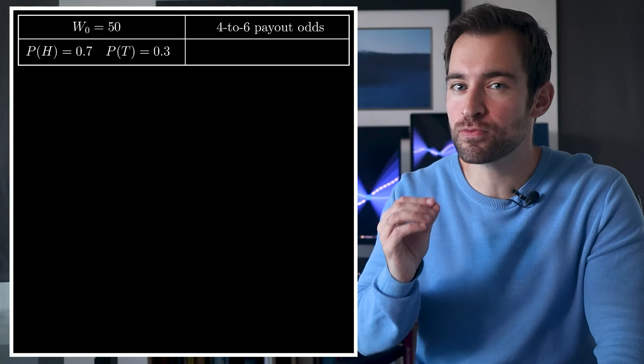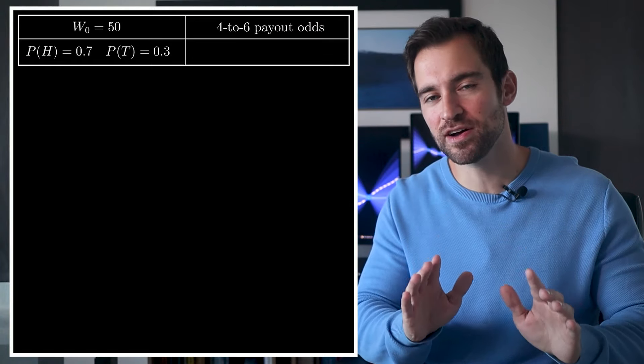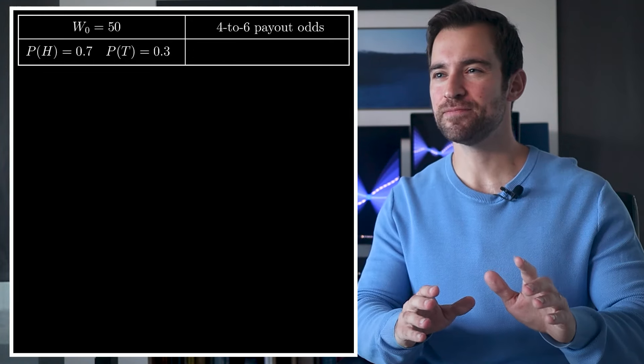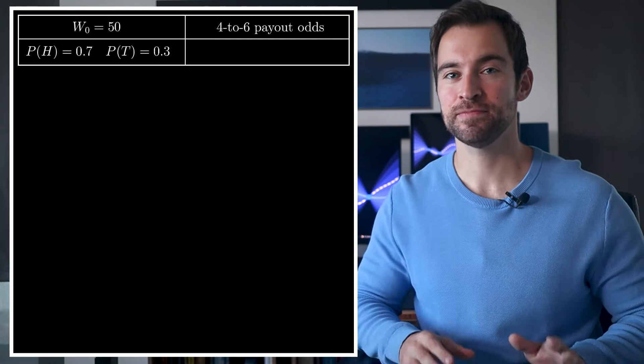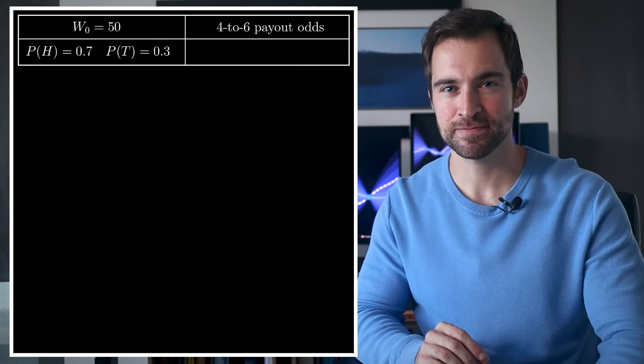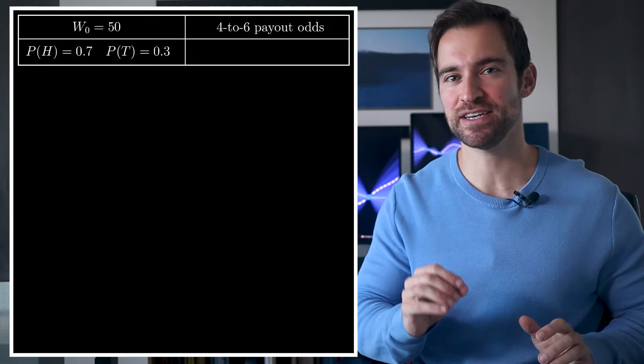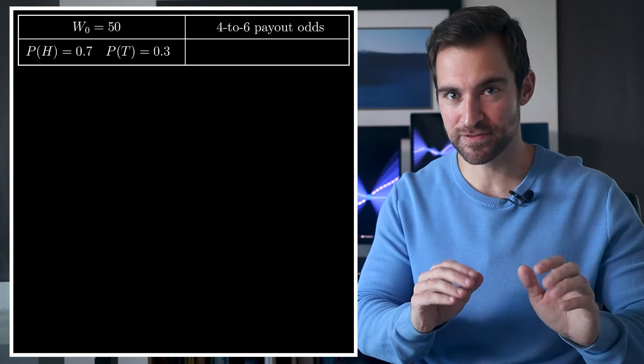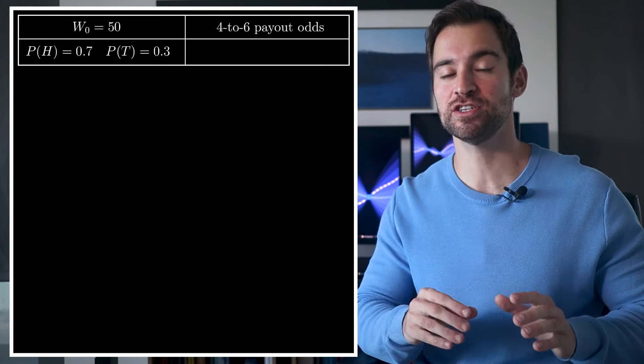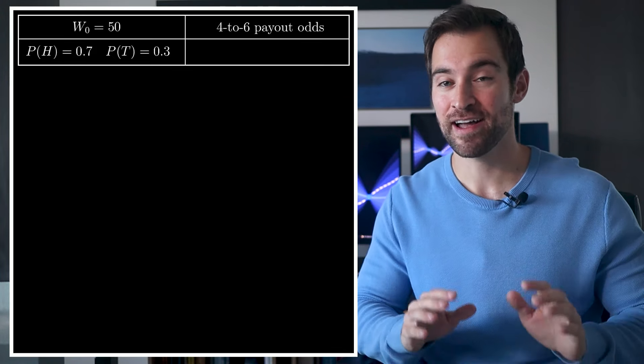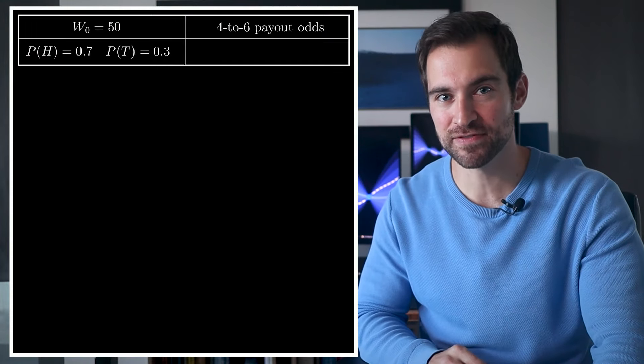If you were to wager only $3, these profits and losses would get cut in half. Now, the first question is, should you even flip this coin once? It turns out, yes, since you expect to make some money on a single flip. If you were to wager $6, for example, there is a 70% chance you'll make $4 and a 30% chance you'll lose your wager of $6. That averages out to a $1 profit.